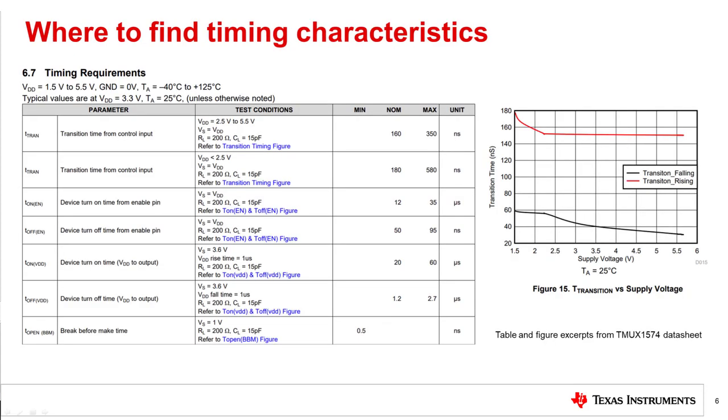These timing characteristics can often be found in the electrical characteristics section or timing requirements section of the datasheet. These characteristics are specified under certain test conditions as listed in the datasheet. These conditions may include load resistance and capacitance as well as differing supply voltage and signal voltage. Some datasheets may even include figures showing the measurement setup for each timing characteristic located in the parameter measurement information section or detailed description section of the datasheet. In addition, the typical characteristics section of the datasheet may show curves of certain timing characteristics as a function of supply voltage or temperature.